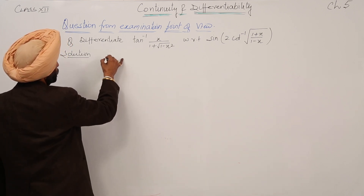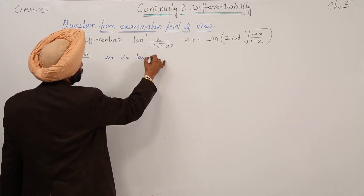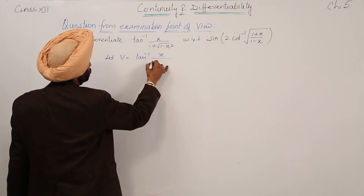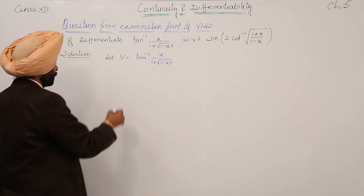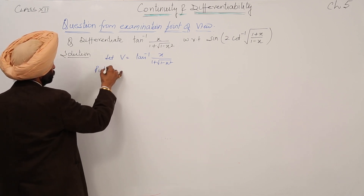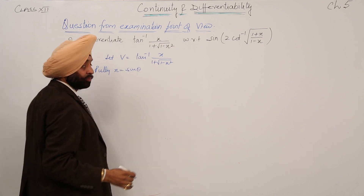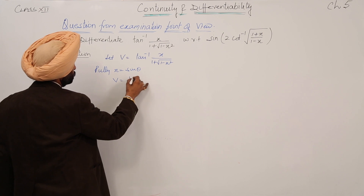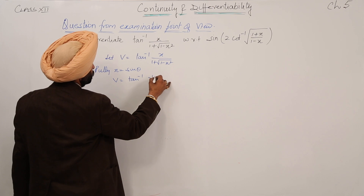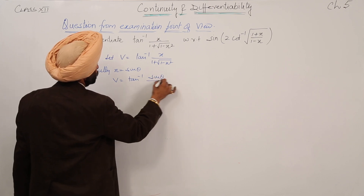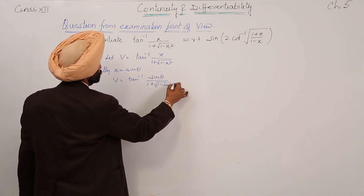Let v equal to tan inverse of x upon (1 plus under the root of 1 minus x squared). Now putting x equal to sin theta, just converting it into the simplest form: v is equal to tan inverse of sin theta upon (1 plus under the root of 1 minus sin squared theta).